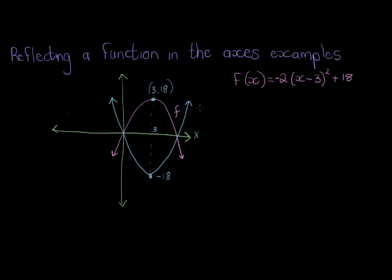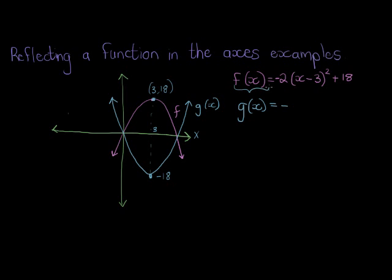We can also see that this parabola has a negative, frowning shape, and when it's reflected it will now look like this. That will be the reflection — let's call it g(x), a new function. g(x), if we look at what we've just learned: if I reflect in the x-axis, my new function g(x) is equal to — every y value gets multiplied by a negative — so negative 1 times f(x).